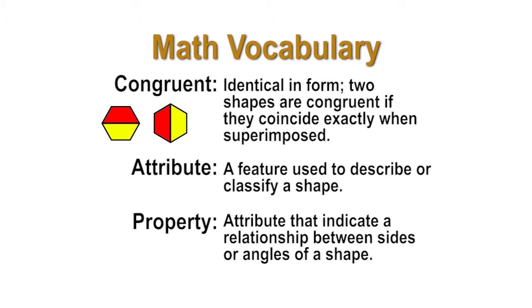For review, if two shapes are congruent, they are identical in form, and properties and attributes are how a shape is described.